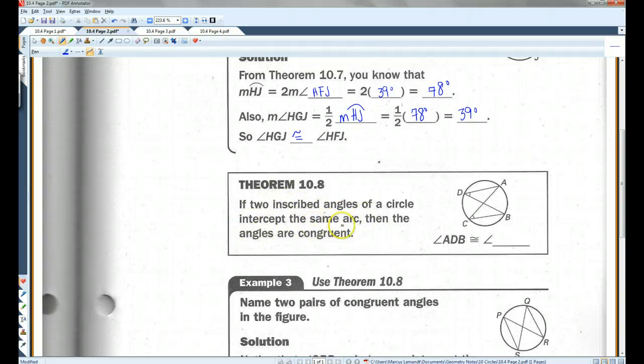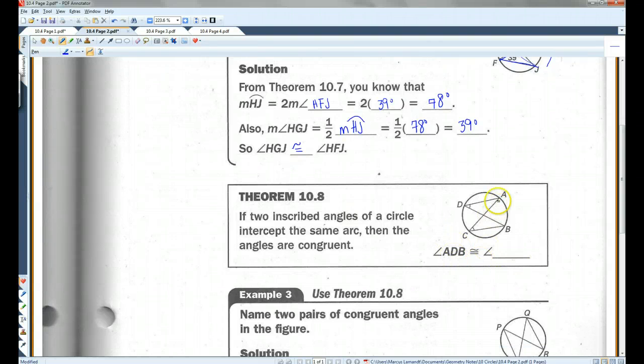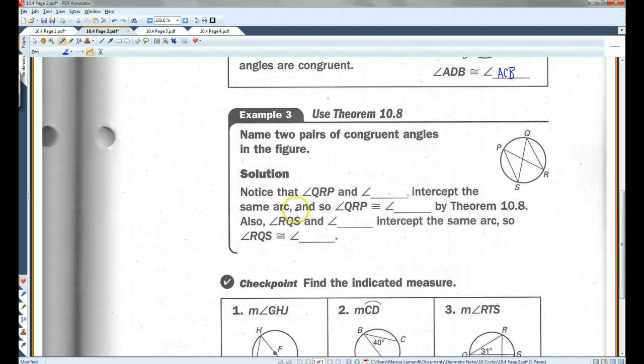Which leads us into Theorem 10.8. If two inscribed angles of a circle intercept the same arc, then the angles are congruent. So in this case, ADB is congruent to angle ACB. So name two pairs of congruent angles in the figure. Notice that angle QRP, it's this angle, and QSP intercept the same arc. This angle and this angle both intercept this arc. So, these two angles are congruent by Theorem 10.8. Also, angle RQS and angle RPS intercept the same arc. So, they're congruent.